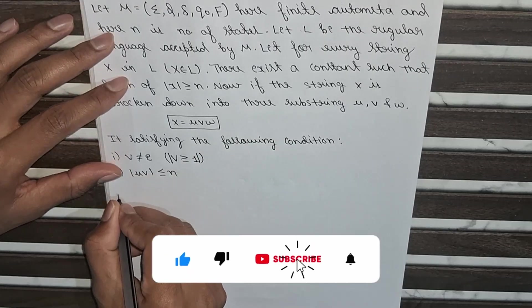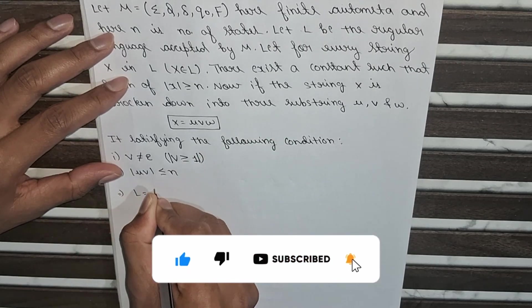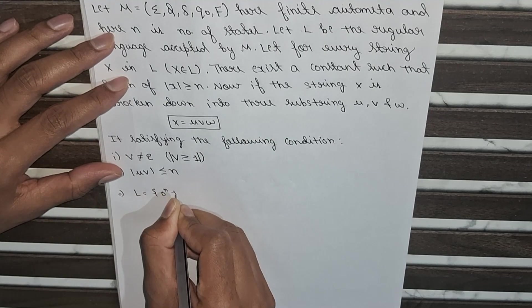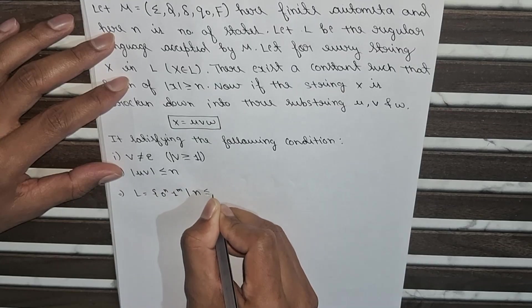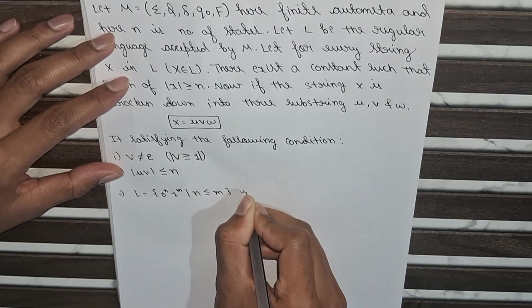So what's the language? Language is 0 to the power n, 1 to the power m such that n is smaller than m is not regular.